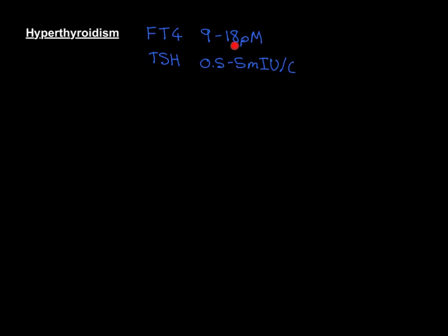So above this upper threshold, when the fT4 goes that high, that's going to suppress the release of thyroid-stimulating hormone by the anterior pituitary. Therefore, you will usually see that the TSH level is reduced hugely — below the lower threshold of 0.5. That would be the classic pattern for hyperthyroidism: a far too high fT4 level, and a suppressed thyroid-stimulating hormone level.